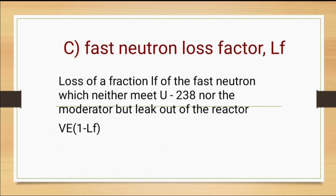The third step is the fast neutron loss factor, Lf. A fraction Lf of the fast neutrons neither interacts with the natural uranium nor with the moderator material, but leaks out through the reactor. So Lf number of neutrons will be lost. If we start with one neutron, the remaining neutrons after fast neutron loss will be 1 minus Lf. Therefore, the equation becomes ν into epsilon into (1 minus Lf).